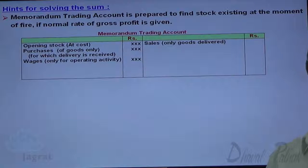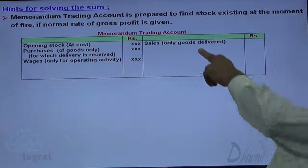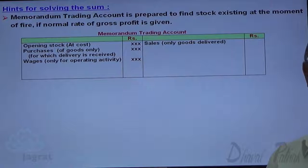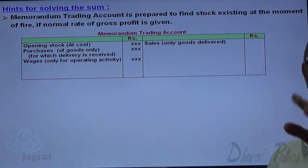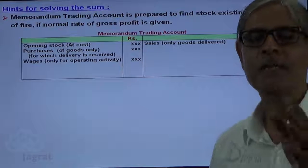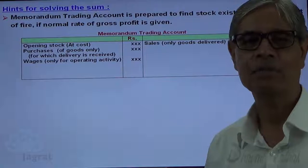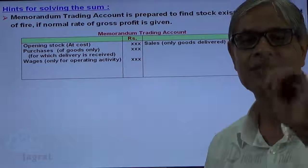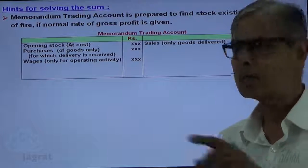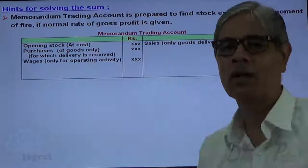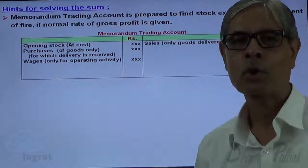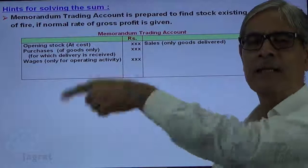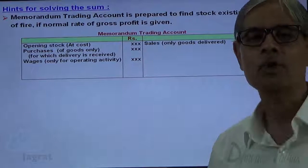On the opposite side, sales are recorded — but only for goods that have been delivered. Goods delivered were kept out of the risk of fire, so they are recorded on the credit side. However, sales include a profit element, so the gross profit in the sales will be recorded on this side of the trading account. Therefore, sales minus gross profit gives the cost of goods sold.